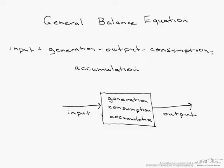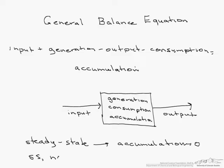There are some simplifications that we can make. For example, if the system is steady state, then our accumulation equals zero. If it is steady state and non-reactive, then we have that input equals output.